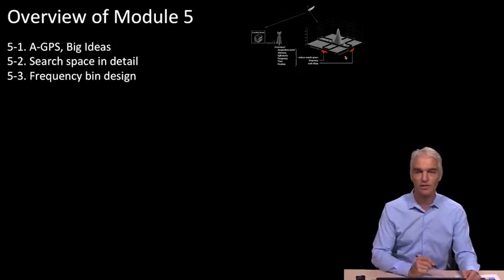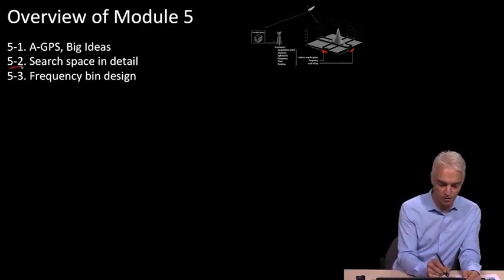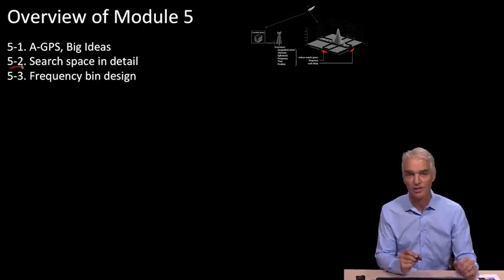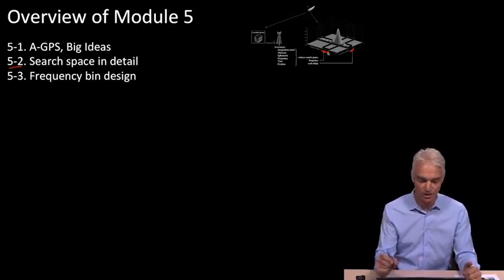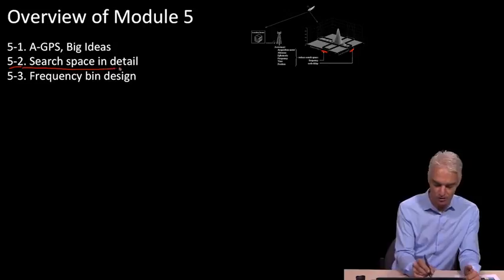And so, we will look at the search space in detail in 5.2, but now we'll look at the search space with assisted GPS helping us. So, it helps us reduce it. How much does it get reduced? That's what 5.2 is going to do for us.